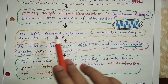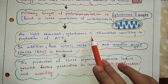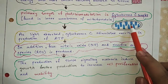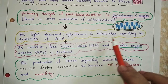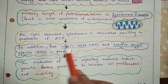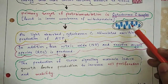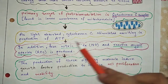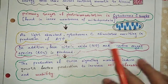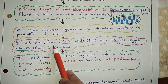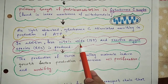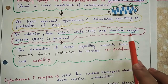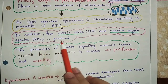When light is absorbed, it stimulates the cytochrome C complex, which is in the mitochondria, and it produces ATP. Along with ATP production, free nitric oxide is also produced, and reactive oxygen species are also produced.